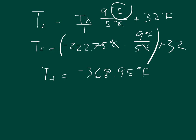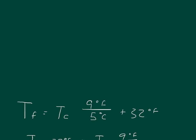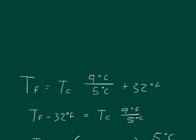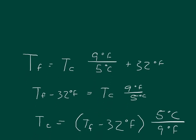Part B wants us to find the opposite — convert from Fahrenheit to Celsius. So we just have to solve the formula for TC. Starting from the formula we just used, we subtract 32 from both sides to move it over. We're left with the 9 over 5 on one side, and we multiply both sides by the reciprocal, 5 over 9, so it cancels out and gives us 1.